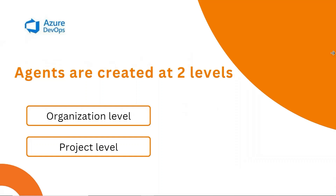One more thing I want to highlight before moving on to the demo: in Azure DevOps, we can create agents at two levels — one is at an organization level and the other is at a project level. In Azure DevOps, we can have multiple organizations, and in each organization we will have multiple projects. If you create an agent at an organization level, all the projects that are part of that organization can use those agents. But if you create an agent at a project level, only the pipelines in that project will be able to use that agent. As part of this demo, we will create an agent at an organization level.